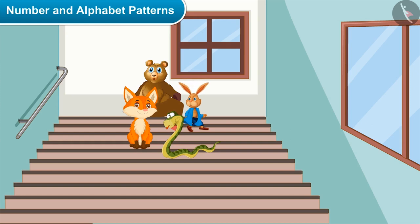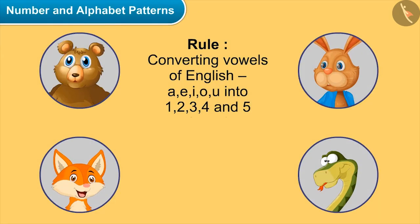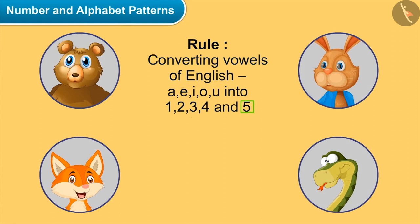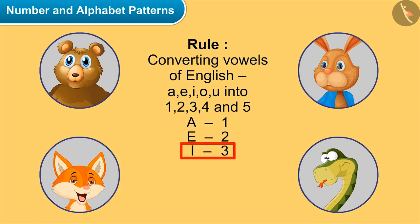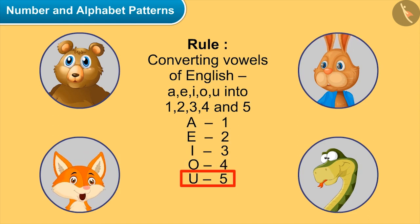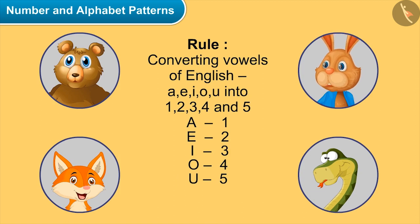We can convert the vowels of English — A, E, I, O, U — into 1, 2, 3, 4, and 5. That means we will convert A to 1, E to 2, I to 3, O to 4, and U to 5. Oh wow, this is quite easy, and our other friends don't even know about this!